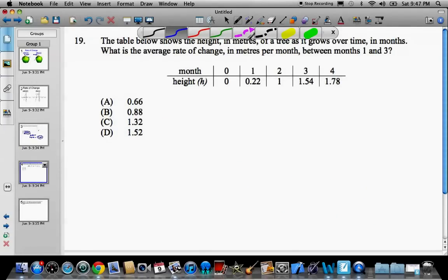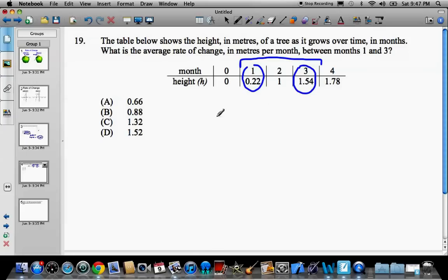Alright, here's another example I pulled from an old public exam. The table below shows the height in meters of a tree as it grows over time in months. What is the average rate of change in meters per month between months 1 and 3? So basically what we're looking for is the average rate of change between those months. When we're given the points, we can use the points and find the slope. So between 1 and 3, here are two points. We have to find the average rate of change, which is equal to the slope, using those points.